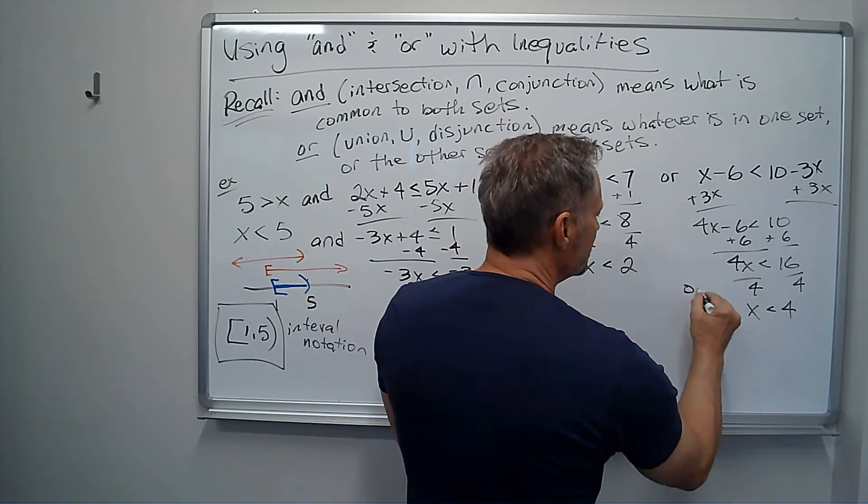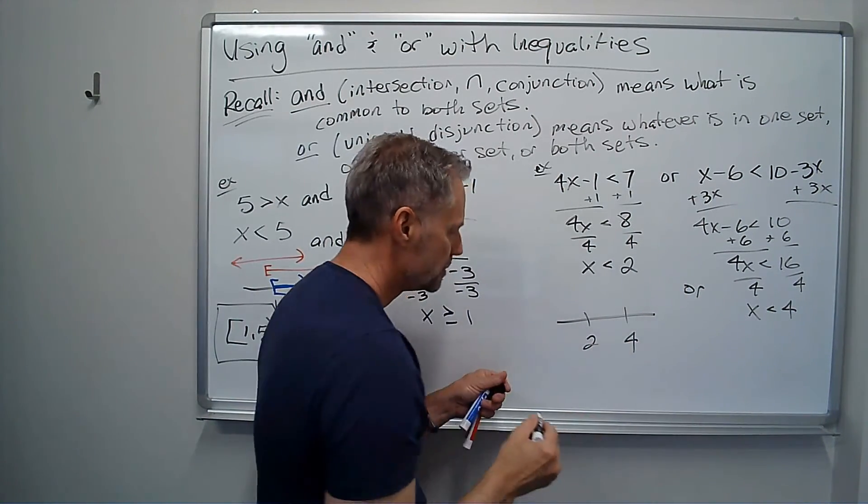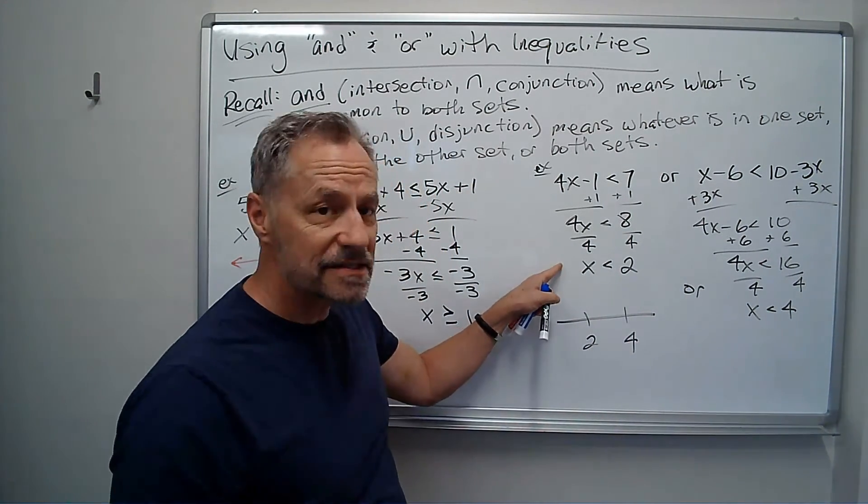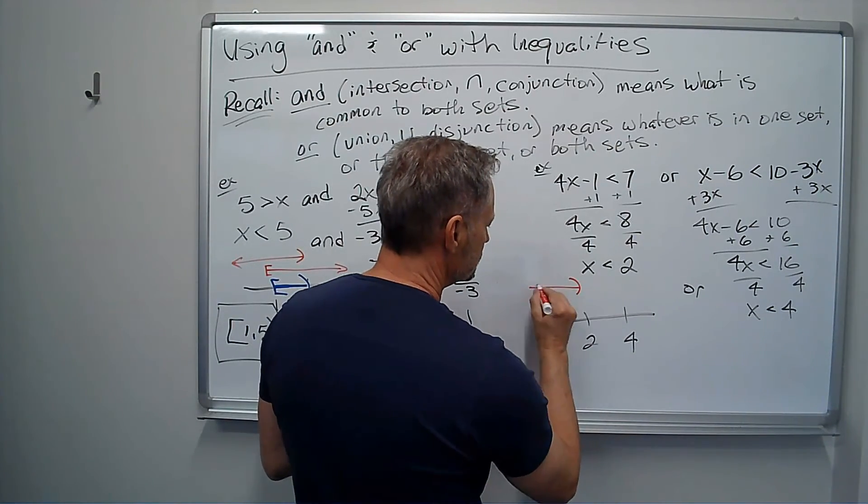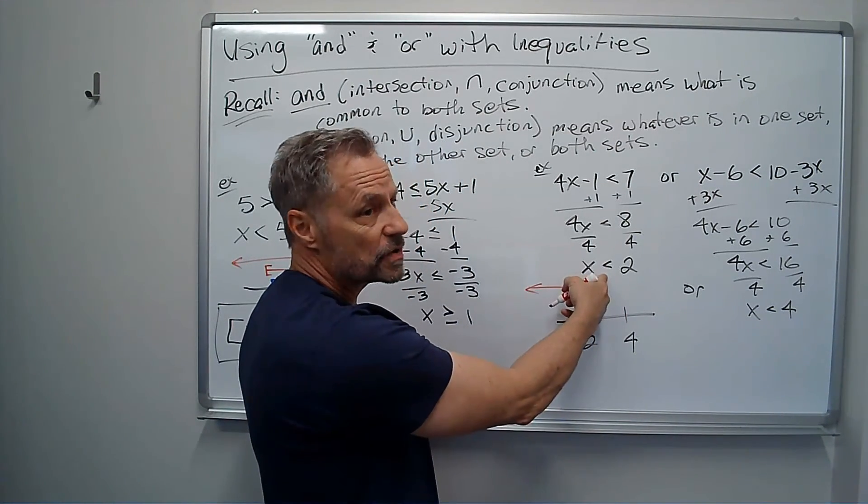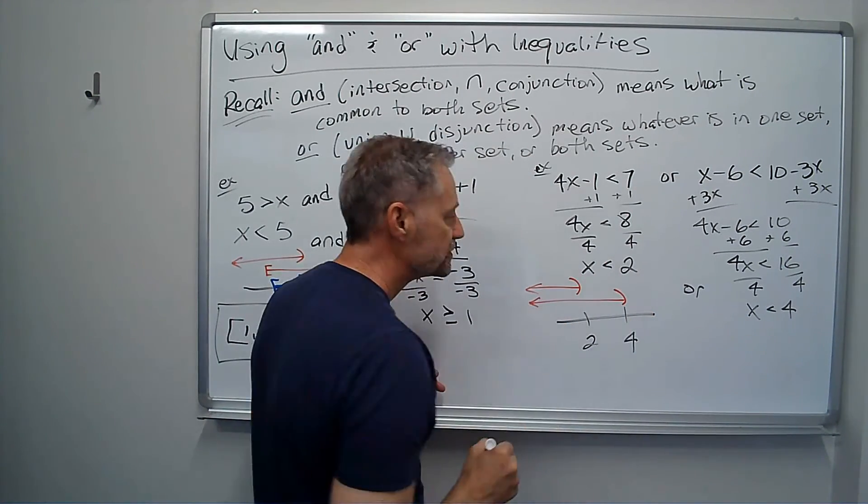Let's graph these. My 2 and my 4. I have x is less than 2. That's this way. Parentheses, because there's no equals on it. Or, x is less than 4. Same way.